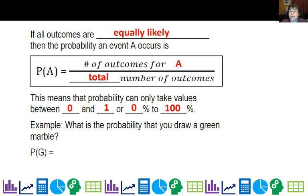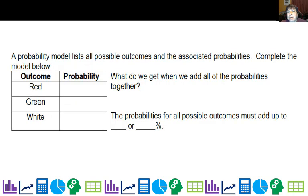Now, you can also express that as a range in percent from zero percent to 100 percent. So what is the probability we draw a green marble? Well, it was just one out of four outcomes, or 0.25, and it's also known as 25 percent. So a probability model lists all possible outcomes and associated probabilities. If we complete the model, it can often look like a table here. So the probability of red, there were two ways to get red out of four. So that's half, 50-50.